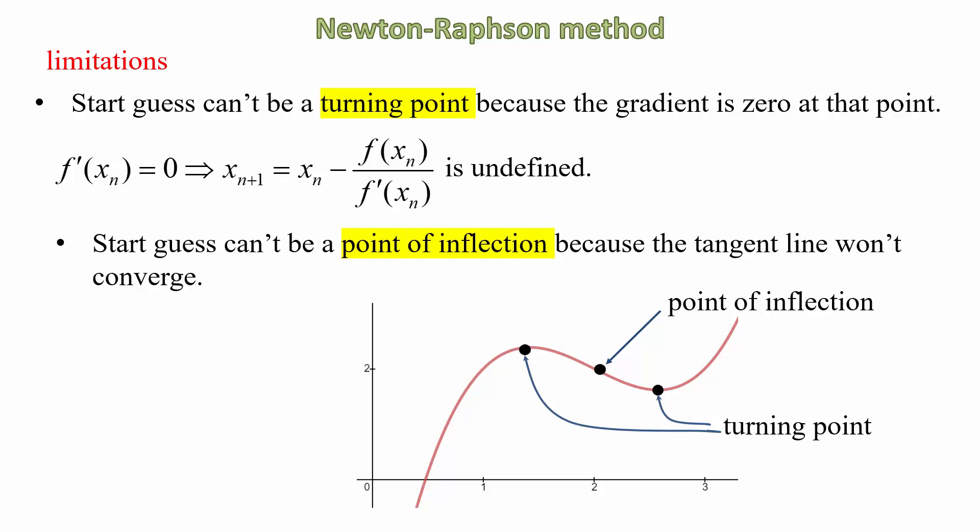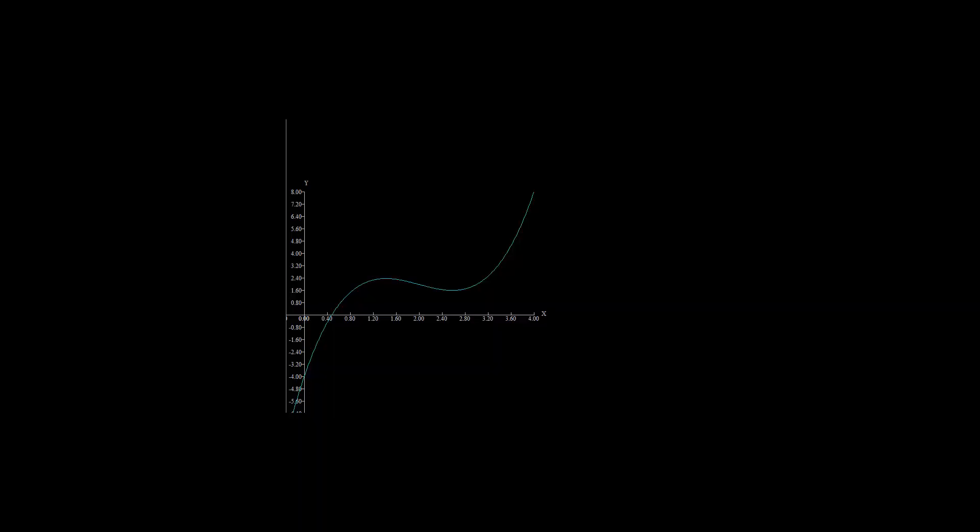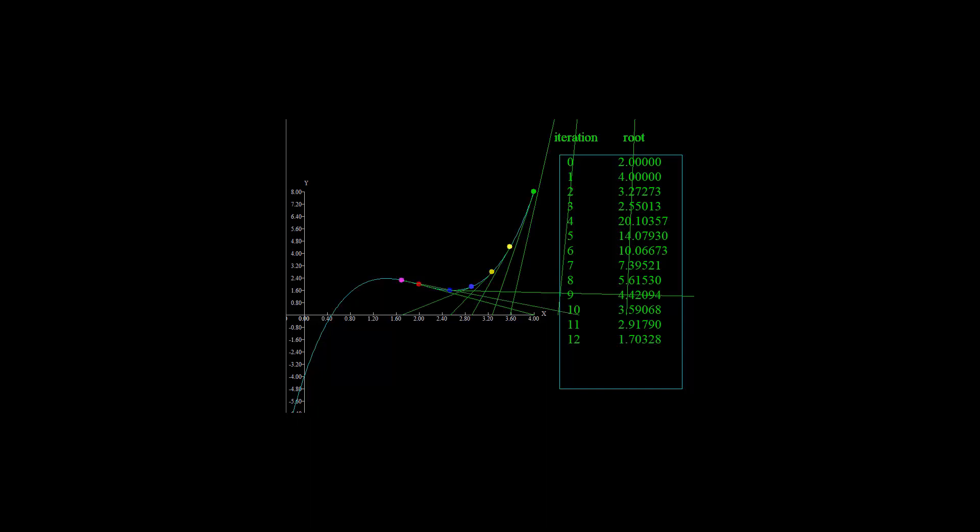Here's a demonstration of what happens when we have a start value at a point of inflection. For this graph, the point of inflection is at x = 2. There's our first tangent. And our first estimate is that the root is 4. Second estimate, second iteration, 3.2. Notice what's happening. The estimates are fluctuating all over the place. Not a good sign. So the message remains: Do not choose turning points and points of inflection as start values.